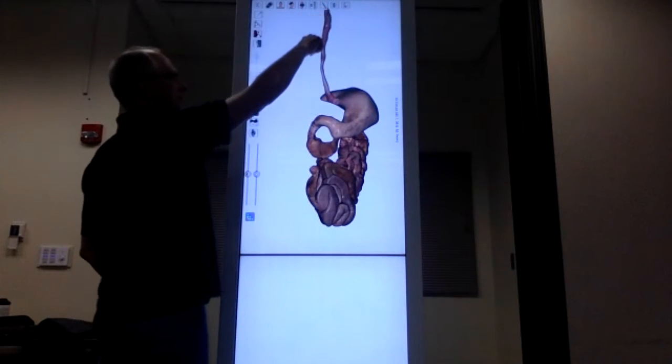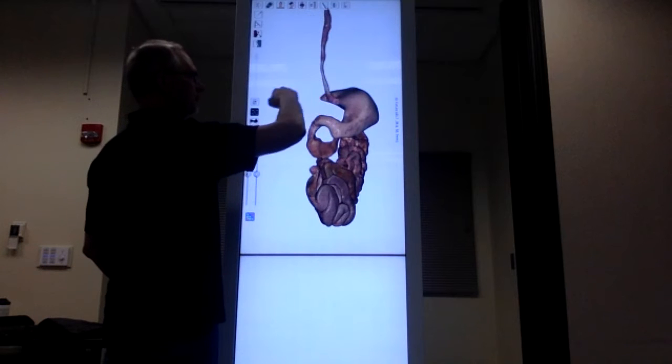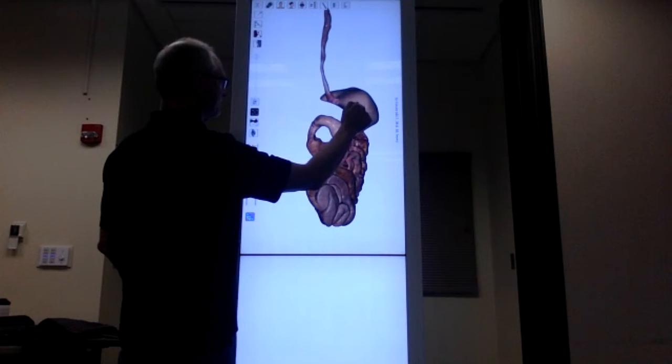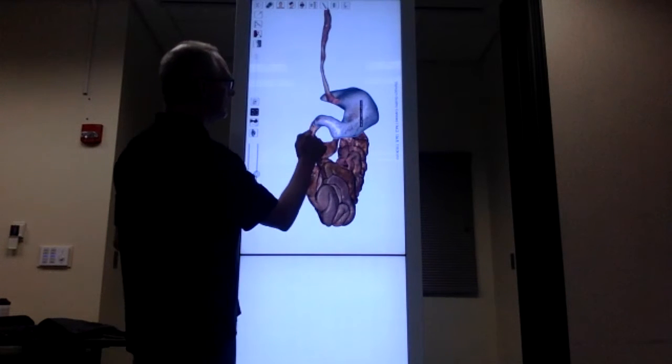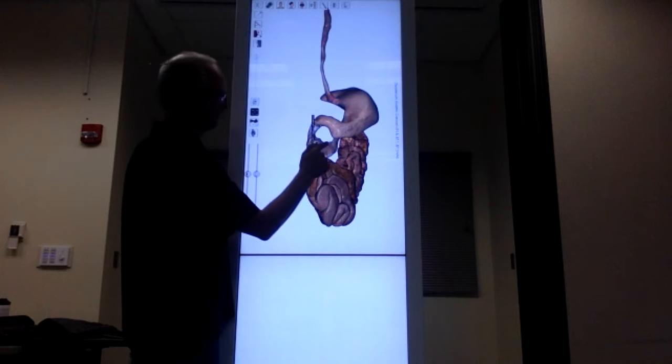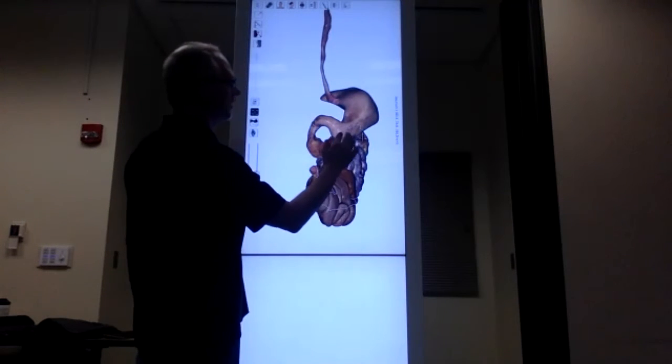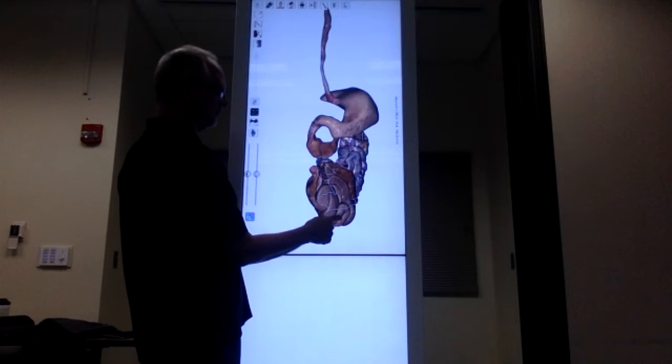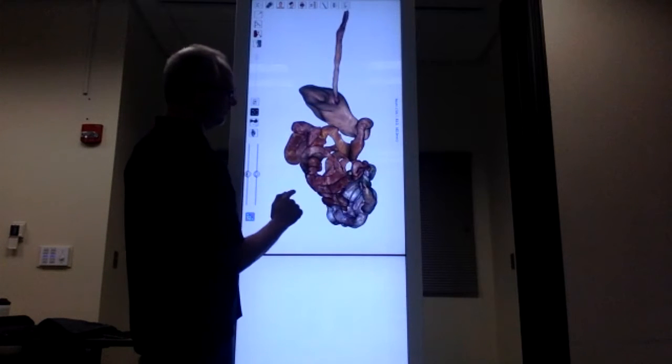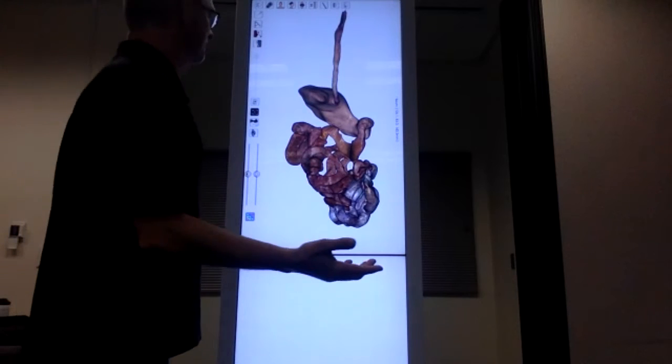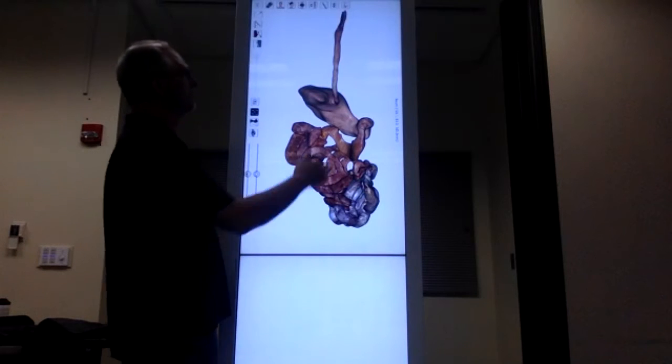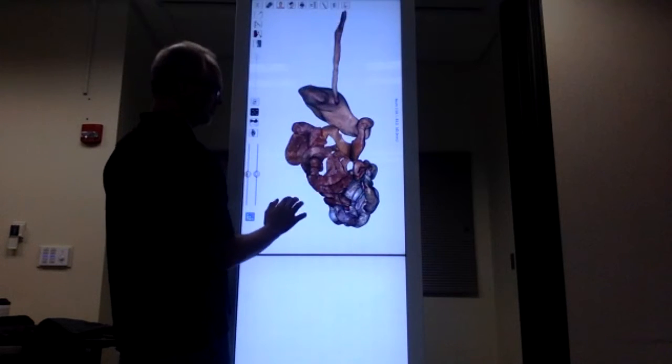Now you can see the esophagus coming down here into the stomach. The diaphragm would be right there and the heart would be over here. The stomach is here. It connects to the small intestine over here with the duodenum, which is the first part of the small intestine. Then that comes over here. We have the jejunum, which is the second part of the small intestine. We come down here, here's the ileum. The small intestine is much longer than the large intestine, and you can see that it's smaller in diameter, which is where it gets its name.